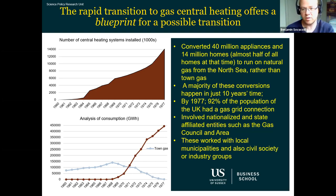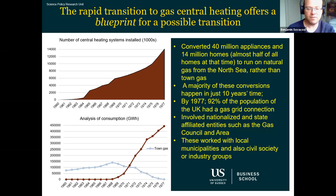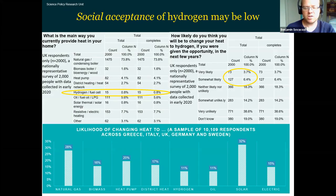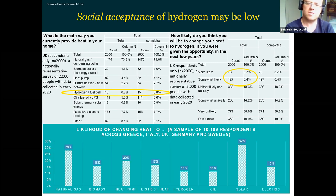This transition was driven by nationalized entities like the Gas Council and area boards, working top-down with municipalities, civil society groups, and companies like Shell and BP. It's interesting that we often forget transitions can be state-led and can be very quick when given the right resources. We've already done it in the UK, where we know about British culture, business models, suppliers, and available infrastructure.